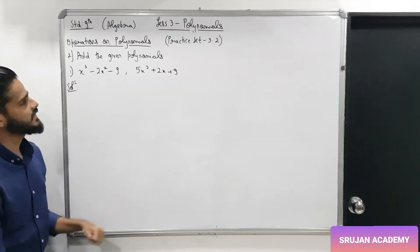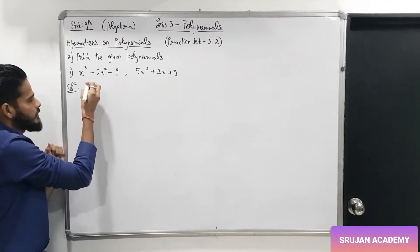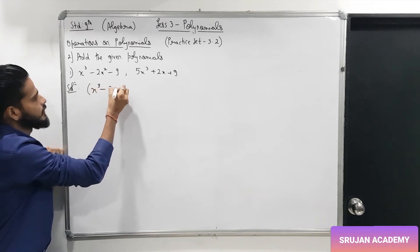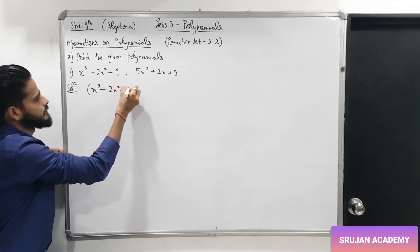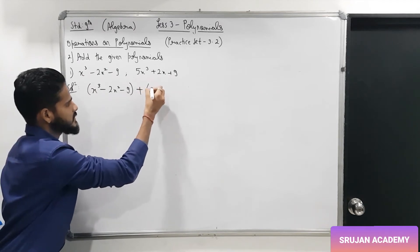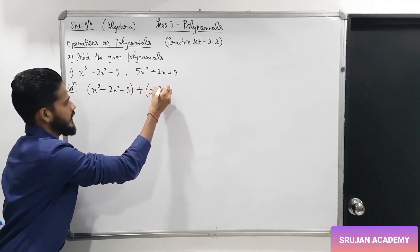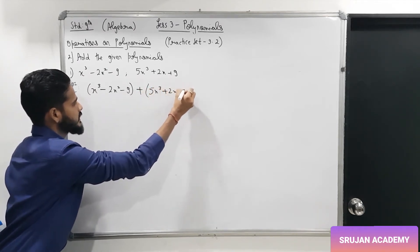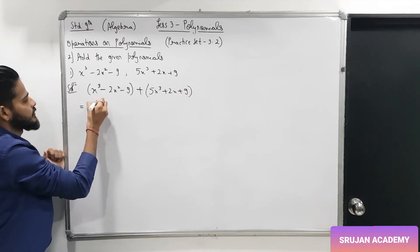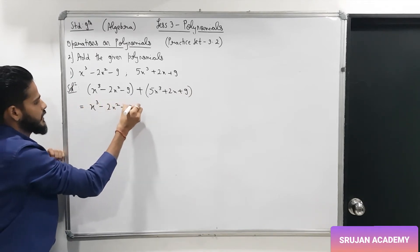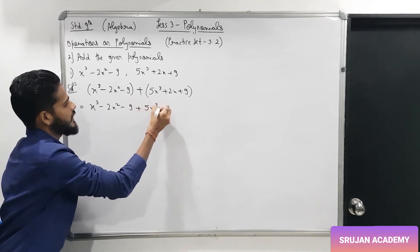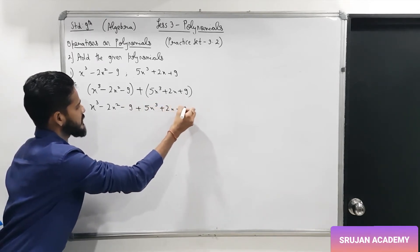Question 2: add the given polynomials. First sum — write both polynomials in brackets and add: (x³ − 2x² − 9) + (5x³ + 2x + 9). Opening the brackets gives: x³ − 2x² − 9 + 5x³ + 2x + 9.